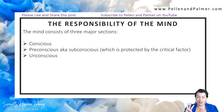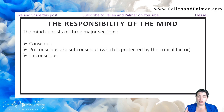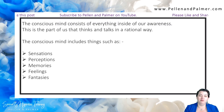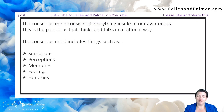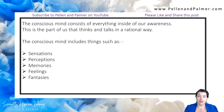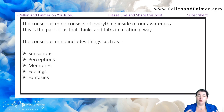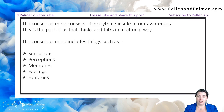So it's divided up into three layers. Many people have a misconception that it only has two layers — the conscious and the subconscious — but it actually has three layers to it. So the first layer: the conscious mind consists of everything that is inside our awareness. This is the part of us that thinks and talks in a rational way. This is the part of us known as auditory digital.